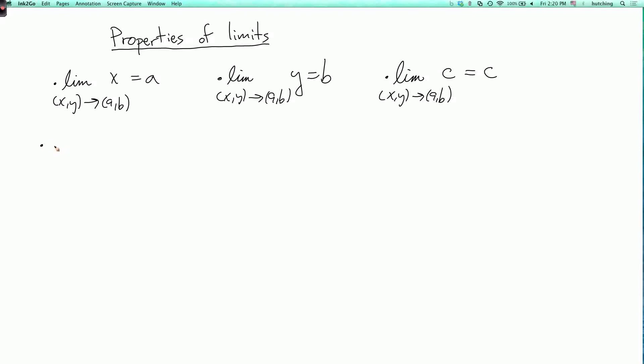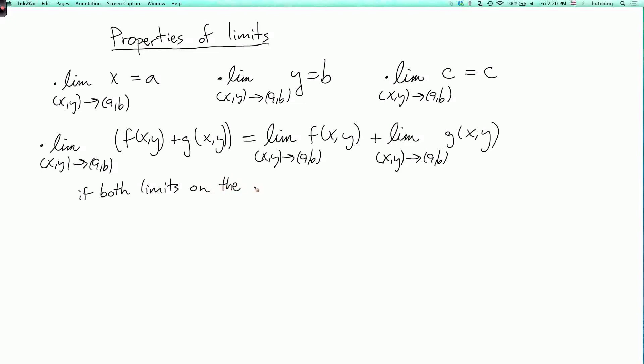The next property is that the limit of a sum is the sum of the limits. That is, the limit as (x,y) goes to (a,b) of f(x,y) plus g(x,y) equals the limit as (x,y) goes to (a,b) of f(x,y) plus the limit as (x,y) goes to (a,b) of g(x,y), if both limits on the right side are defined. So if both limits on the right are defined, then the limit on the left is also defined and equal to the sum of the limits on the right.